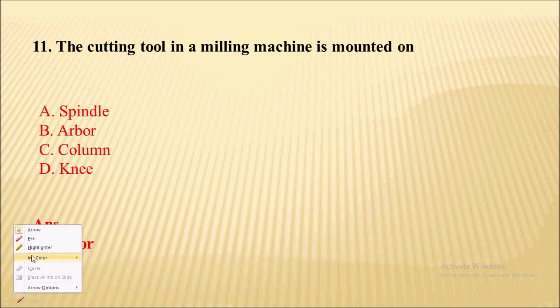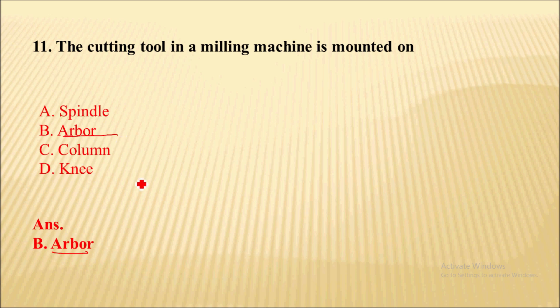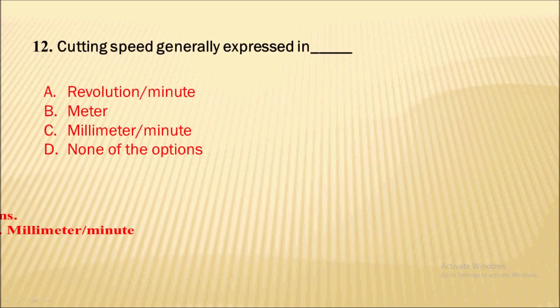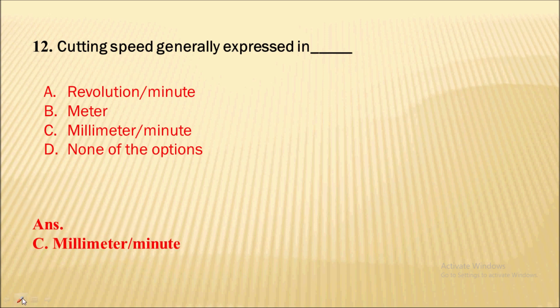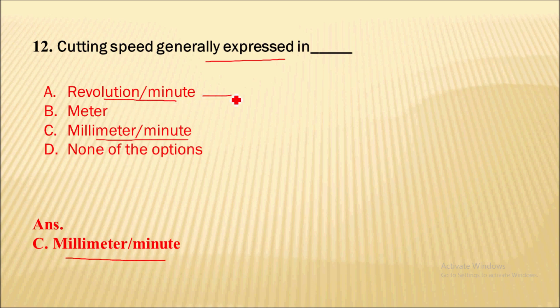Next question: the cutting tool in a milling machine is mounted on — in the case of a milling machine, the cutting tool is mounted on an arbor. The next question: cutting speed is generally expressed in — cutting speed is expressed in meters per minute.